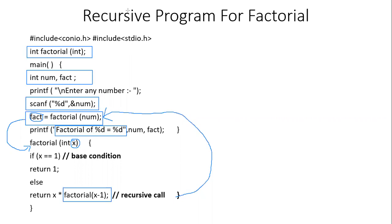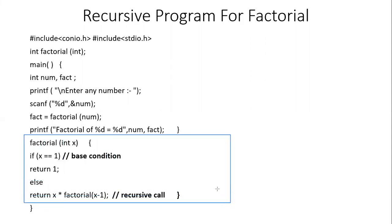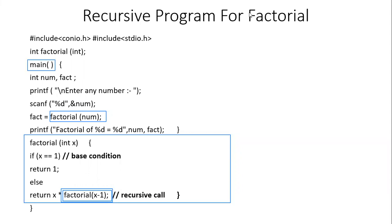Why is this called recursion? Here is the definition of the function factorial, and within that definition there is a call to the same function factorial — that is recursion. There is also a call to factorial in the main function, but since that call is inside main, it is not recursion. Calling the same function from within its own body is recursion.